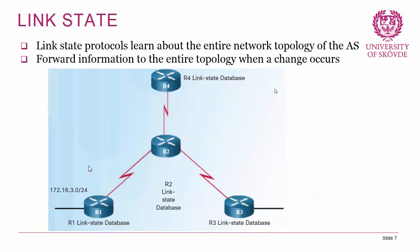In contrast, link state protocols learn about the entire topology of the autonomous system, and they forward information to the entire topology when there's a change anywhere within it. This makes for the ability to have faster convergence in some cases, but it's also more resource intensive because every router has to be aware of more stuff. Instead of just being aware of the next-hop address, every router within the autonomous system is aware of the whole topology.